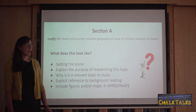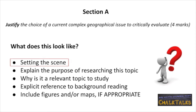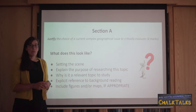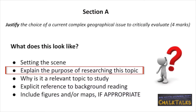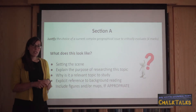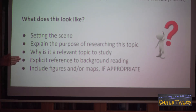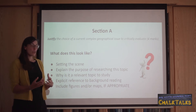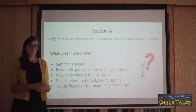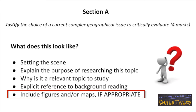Section A is called the justification, but it's more commonly referred to as the introduction. The marker has probably no knowledge of your chosen topic, so you need to set the scene — give some context to the issue, where the location is, what dates are involved, and what the issue is all about. Then explain the purpose of research in this topic: why is it controversial, what are you aiming to tell the marker, and why is this a relevant topic to study? Within the introduction you should refer to background reading throughout, and you can refer to the viewpoints you intend to elaborate on. You may want to include some maps and diagrams at this stage, but only where appropriate, and please make sure you refer to them in your text.